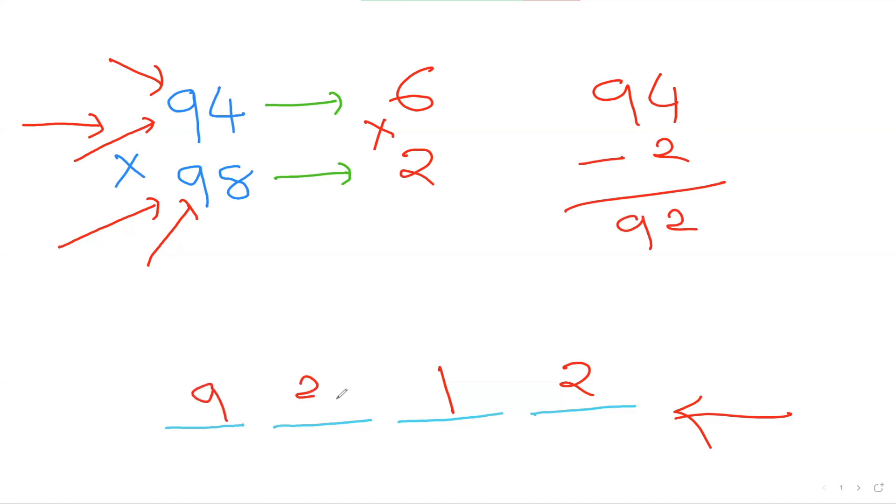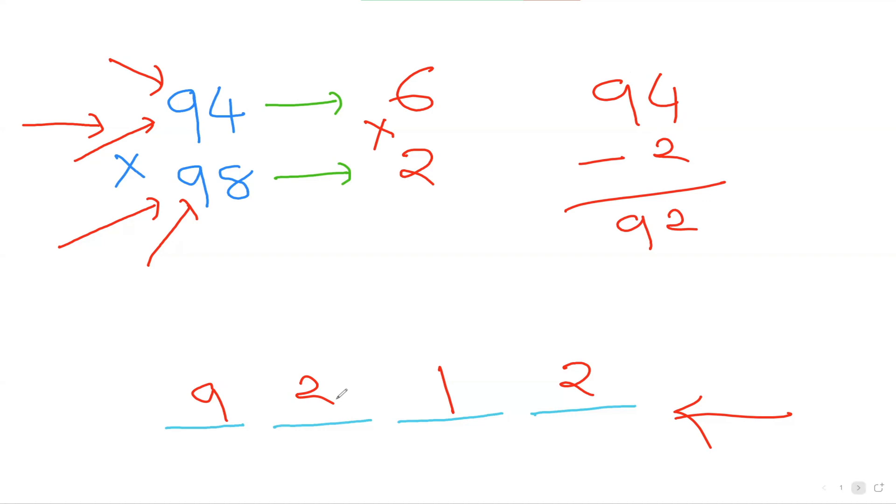94 times 98 is 9212. Let's do another question guys to get the hang of this. So let's say 93 times 95. My first step is how far is 93 from 100, which is 7. How far is 95 from 100? 5.